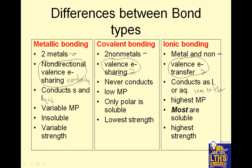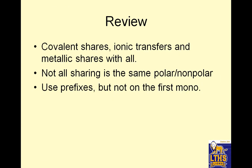Ionic conducts as liquid or aqueous because that allows ions to flow. Metallic bonding has a variable melting point. Covalent has a low melting point. And ionic bonding has the highest melting point because it is strongest. Metallic metals are insoluble and variable strength. For covalent bonding, only polar is soluble, and covalent is the lowest strength of these three types. For ionic bonding, most of them are soluble — that's the highest strength.